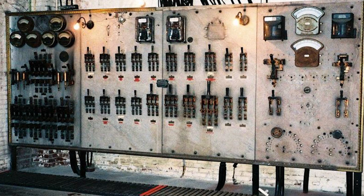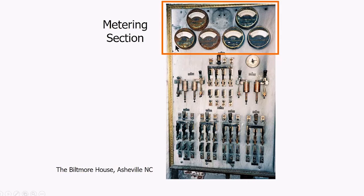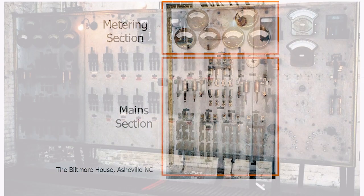If we look closely at one section, you can see some similarities to today's switchboards. For example, it has a metering section, and then it has these double throw knife switches, which were actually used to transfer power from the utility to the generator. And we still build switchboards today that are called main tie generator switchboards.